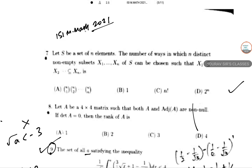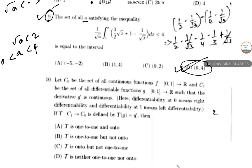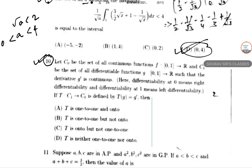Hello students, welcome to Shorosers Classes. This is ISI M.Math 2021 solution; solving question number 10. They define C0 as the set of continuous functions from [0,1] to ℝ, and C1 as the set of differentiable functions G from [0,1] to ℝ such that G' is continuous. The map T: C1 → C0 is defined as T(G) = G'. We need to check if T is one-to-one and/or onto.